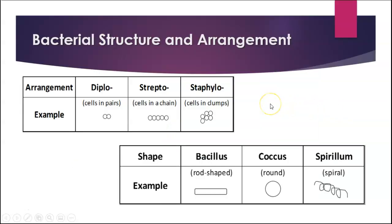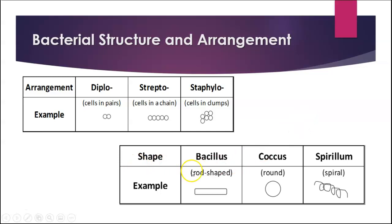There are terms used to refer to bacterial structure and arrangement — there's a worksheet you'll do that utilizes this information. When bacteria are arranged in pairs, that's called diplo, so those would be diplococcus. Strepto means they're in a chain — like strep throat. Staphylo, or staph, has cells in clumps like clusters of grapes. The shapes: bacillus is rod-shaped, coccus is round, and spirillum is spiral or curved in some form.